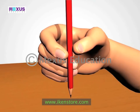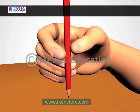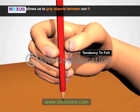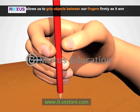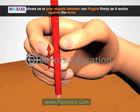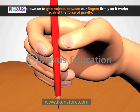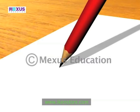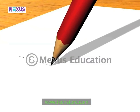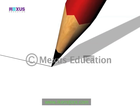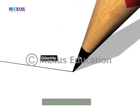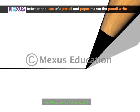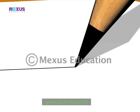Because of friction, we can hold objects between our fingers. For example, a pencil has a tendency to fall because of the force of gravity. Friction acts on the pencil against the force of gravity and stops it from falling, so we can hold the pencil. We use a pencil to write, and it writes because of friction. The lead of a pencil is made of graphite. Friction between the lead and paper causes small particles of graphite to break off and get deposited on the paper.